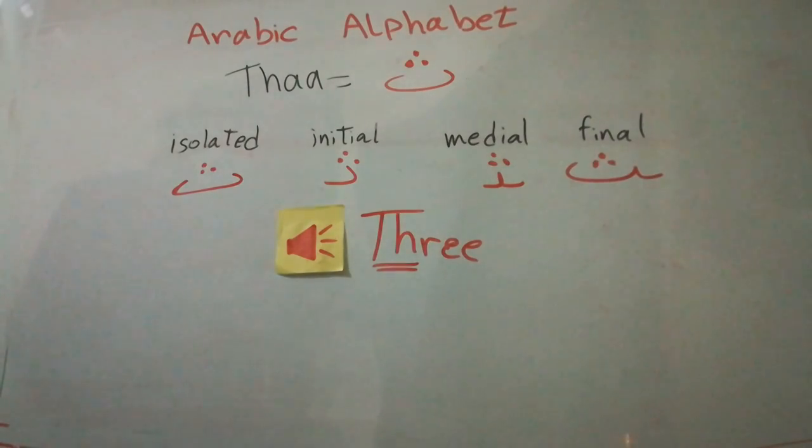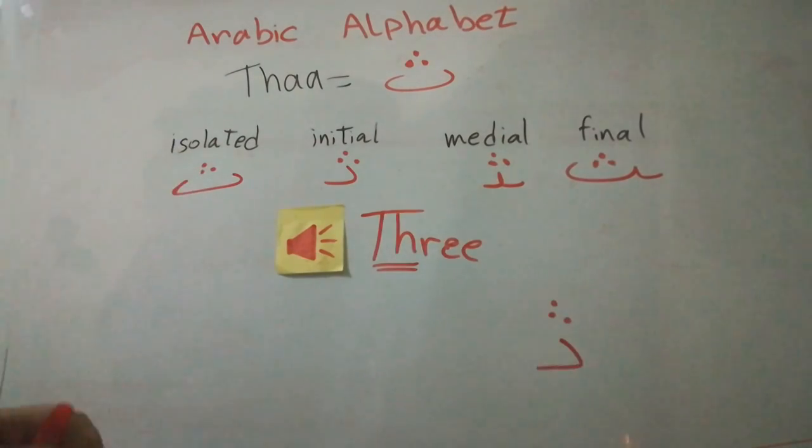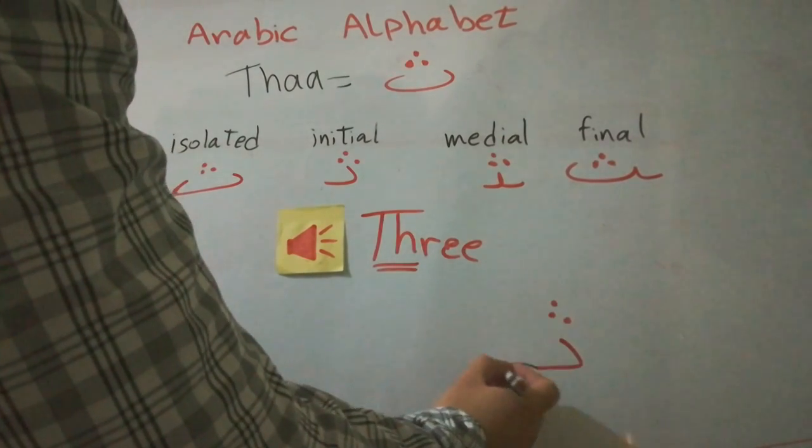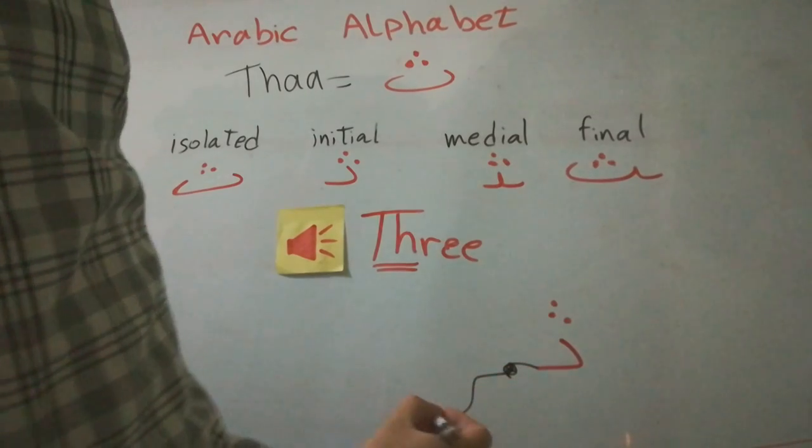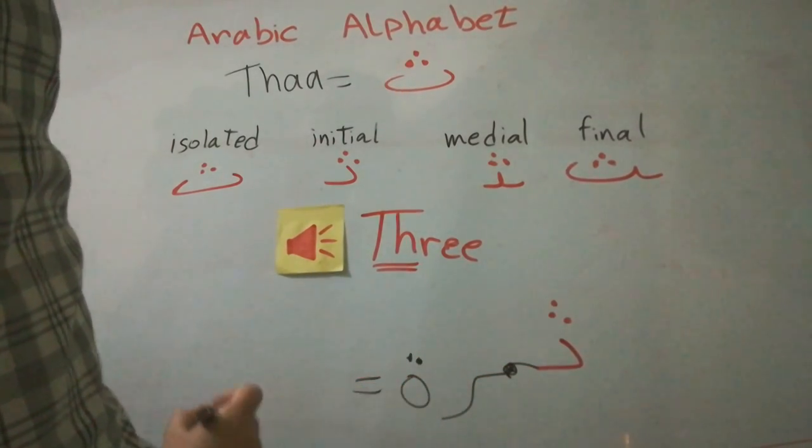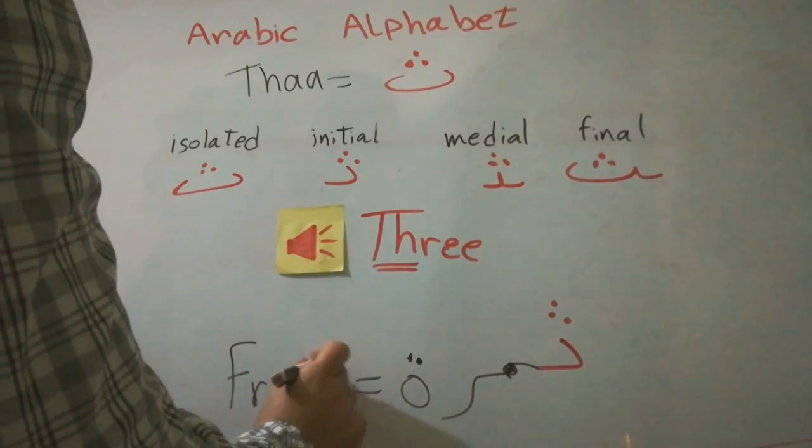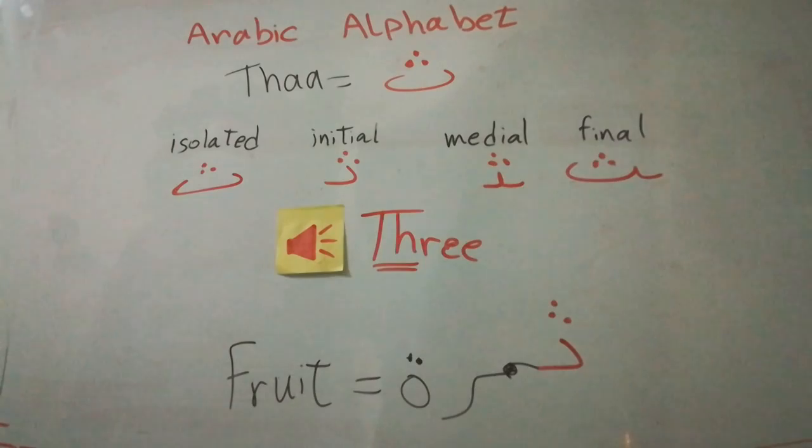Okay? Let's take an example for that. This is exactly right. The word THA. THA, which means fruit. THA, which means fruit.